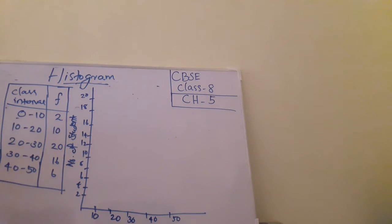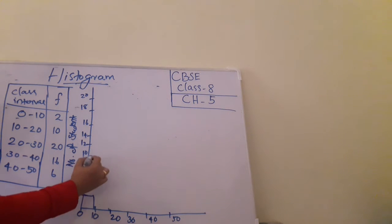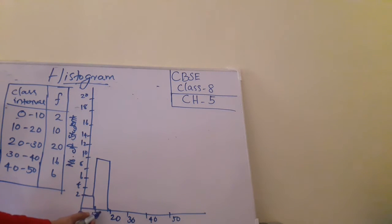See here, 0 to 10, frequency is 2. Then 10 to 20, it is 10. Then we need to draw like this. There is no gap between the class intervals.